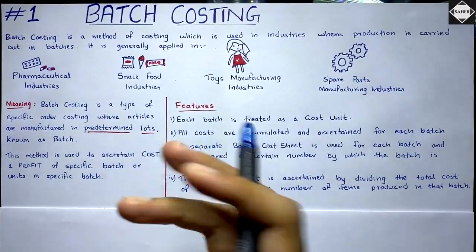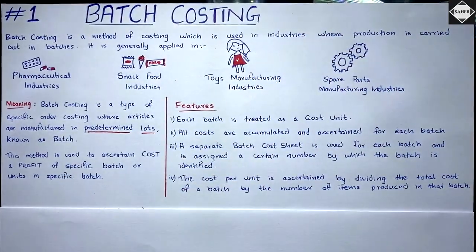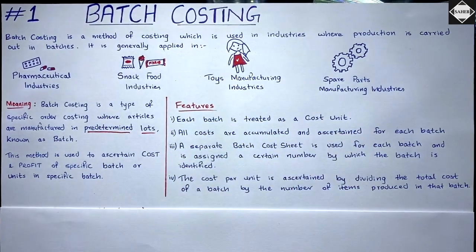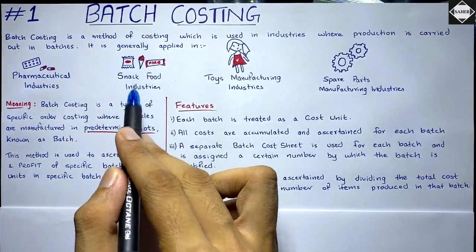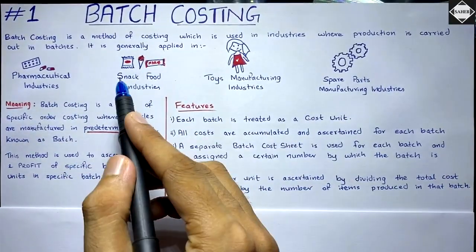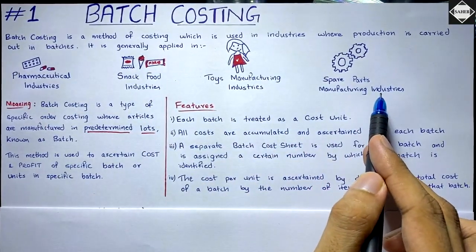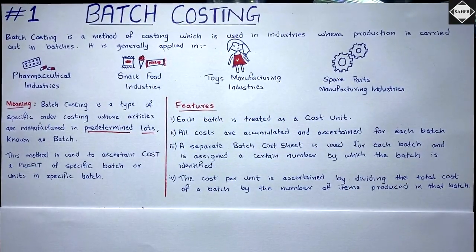For example, in a toys manufacturing industry, a Doraemon toy will be produced in groups — maybe 10,000 Doraemons at a time. Industries that use batch costing include pharmaceutical industries, snack food industries like biscuits, chocolates, ice creams, and chips, toys manufacturing, spare parts manufacturing, and ready-made garment factories.